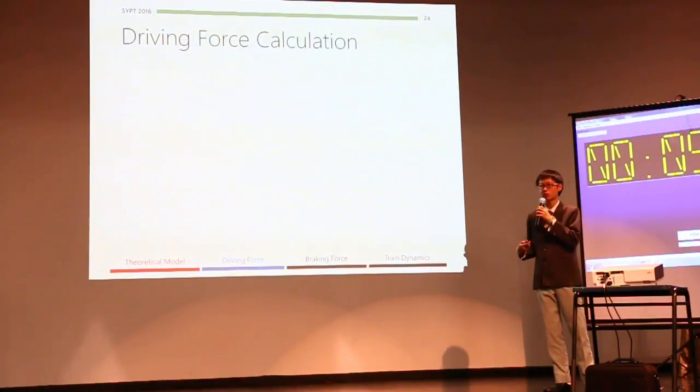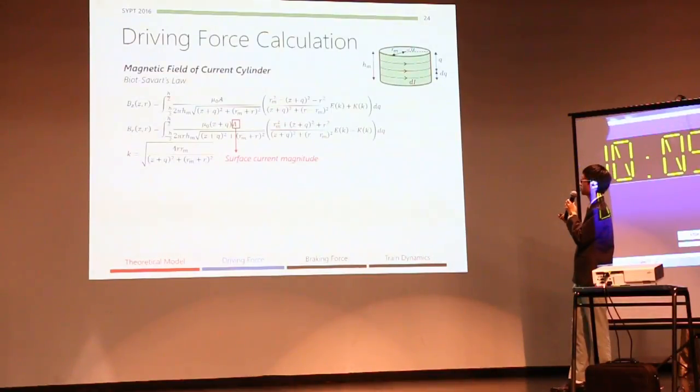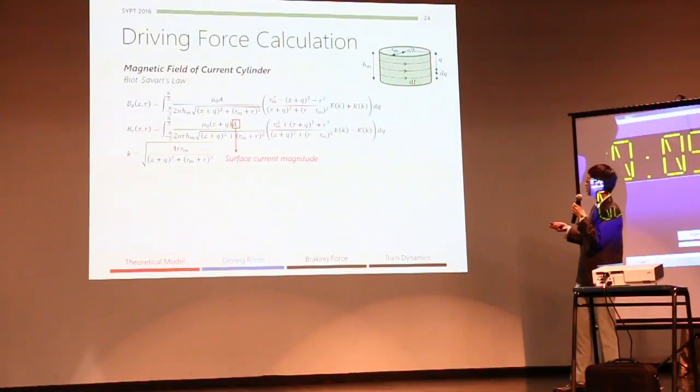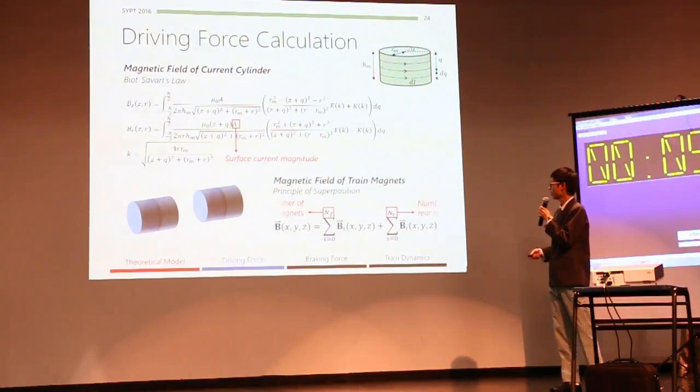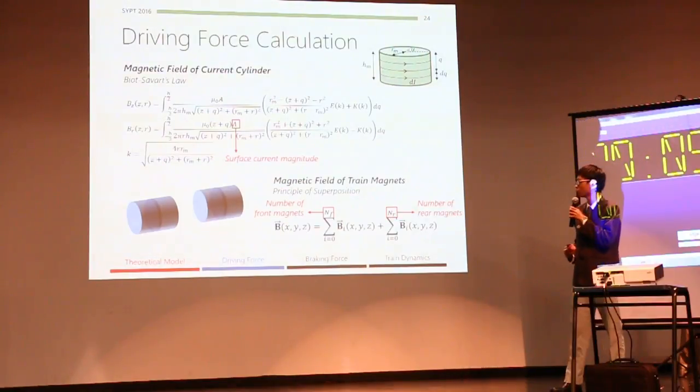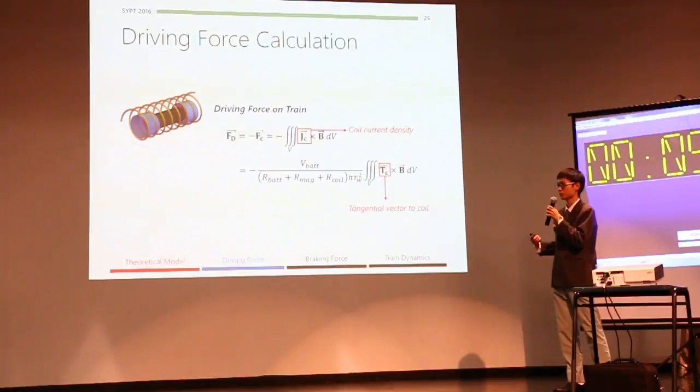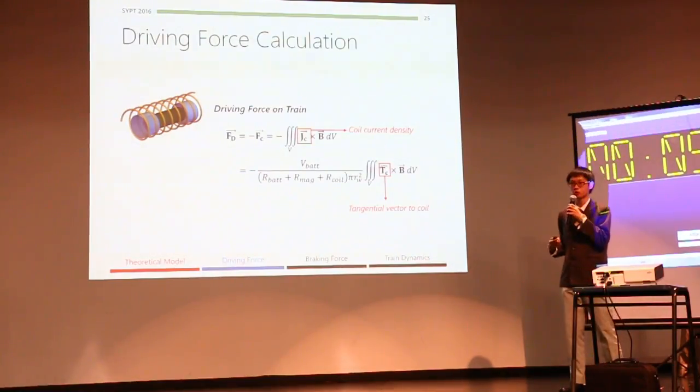So, having understood the qualitative mechanism for driving force, we can now move on to quantitatively calculate it. We model our magnets as current cylinders, and we integrate the Biot-Savart law across our geometry to obtain the following magnetic field equations. In these equations, A is the surface current magnitude, or in other words, the strength of our magnet. And we can then sum up the individual contributions from individual magnets to obtain the magnetic field of our train. We can now take the cross product between the coil current density and the magnetic field of our train to find the driving force of our train.